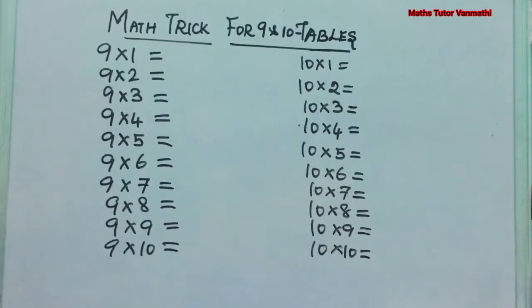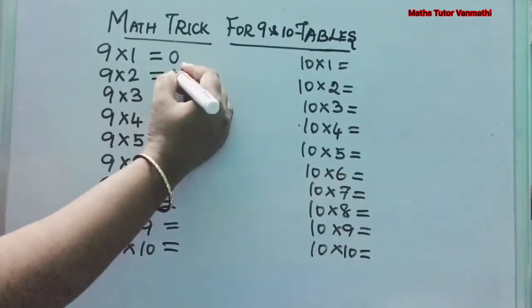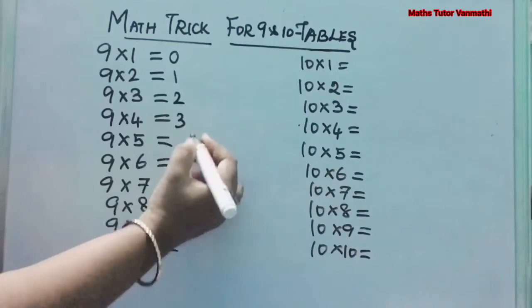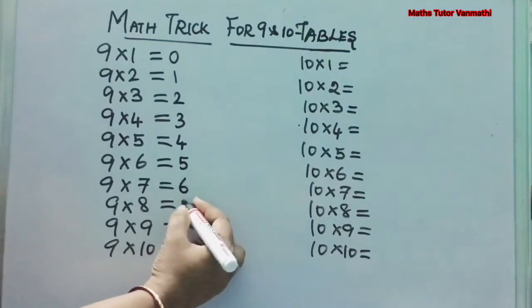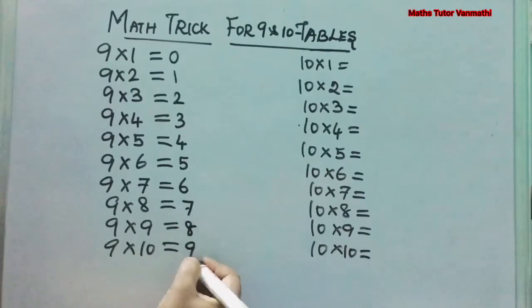I have written the 9 tables without the answers. Now we are going to follow that trick. So, start from 0. Write 0, 1, 2, 3, 4, 5, 6, 7, 8, 9. We are writing our whole number. Starts from 0. Continuous numbers only. 0 to 9 we have written from top to bottom.